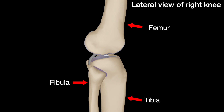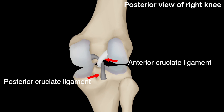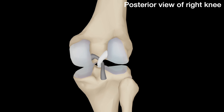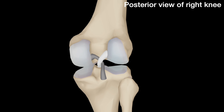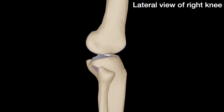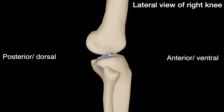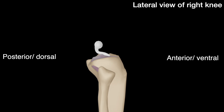The ACL and PCL are two very important ligaments in the knee. In this example, the ACL is white and the PCL is grey. The ACL originates from the medial aspect of the lateral condyle of the femur and inserts in the intercondylaris anterior on the tibia. Due to its orientation and its sites of insertion, the ACL acts mainly to resist anterior translation of the tibia. It also resists medial translation and internal rotation.